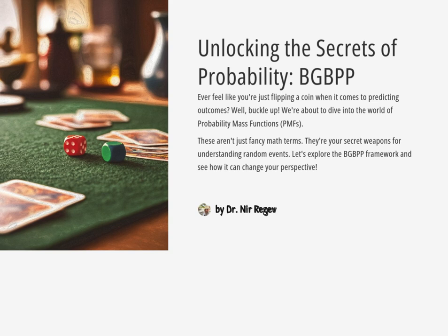Ever feel like you're just flipping a coin when it comes to predicting what's going to happen next? Yeah, I know that feeling. But what if we could actually calculate the odds of something happening? Well, we can. That's where our deep dive today comes in — probability mass functions. PMFs. They sound kind of intimidating, but they're like cheat codes for understanding random events.